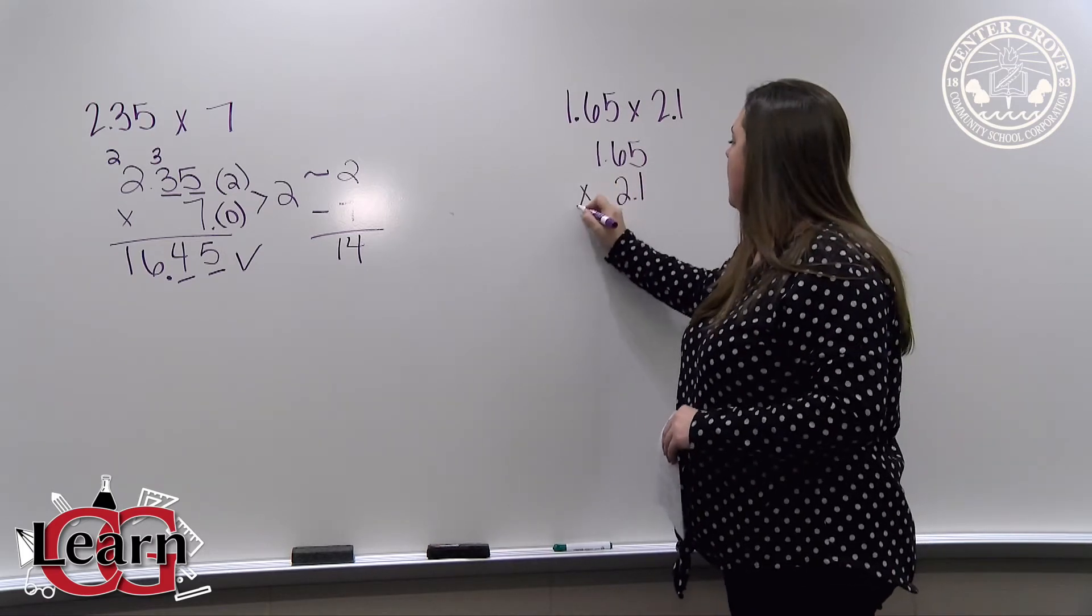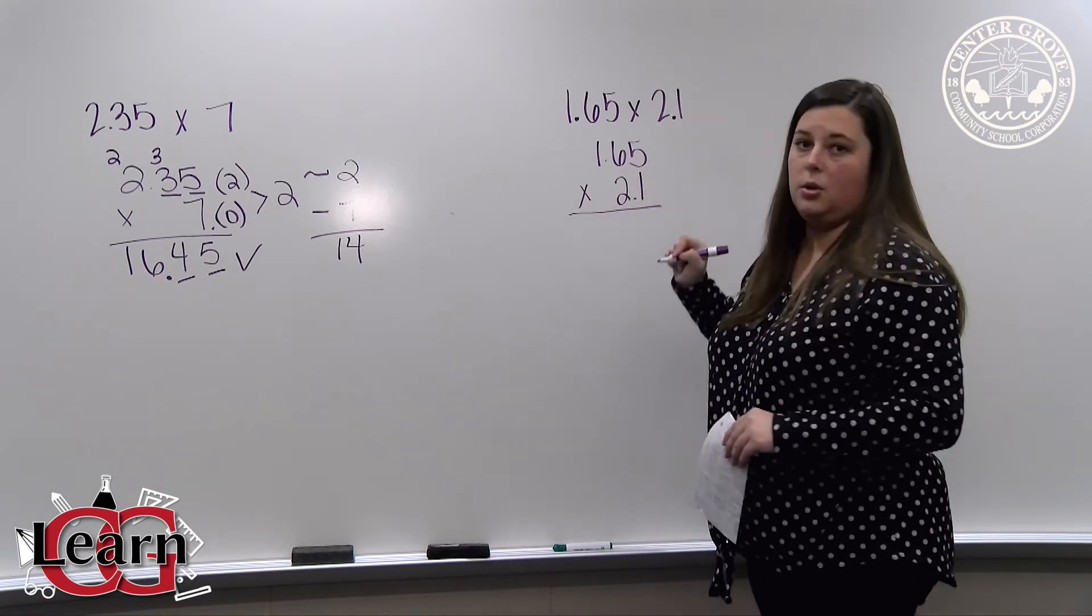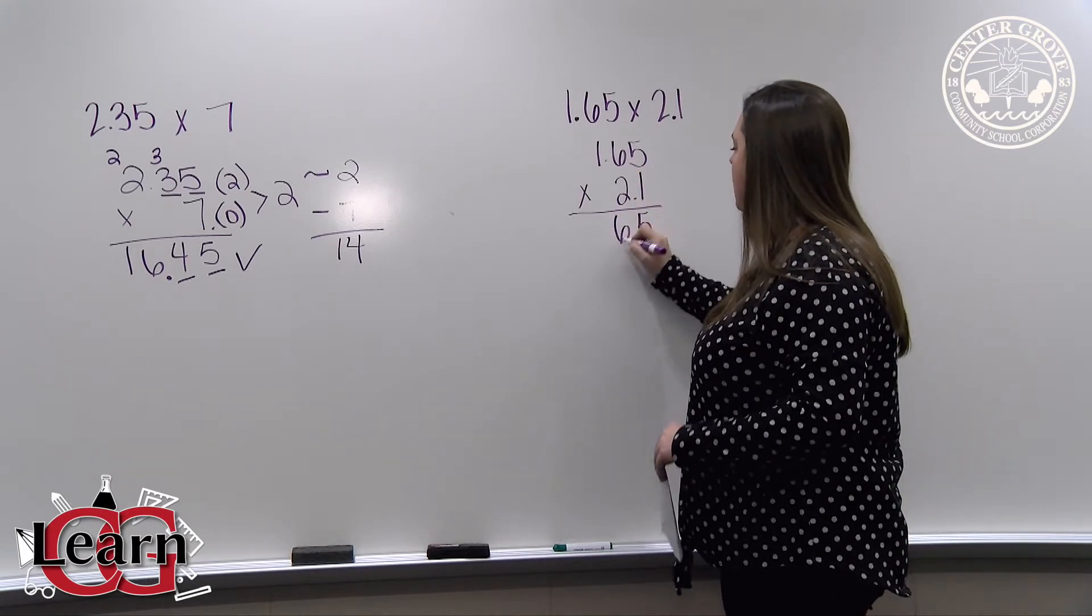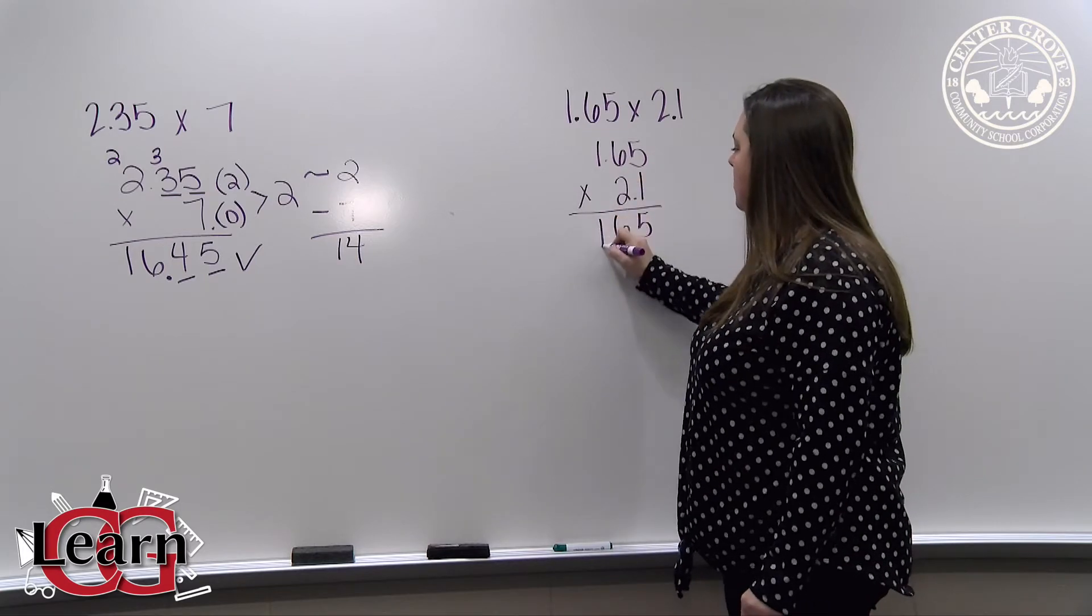We multiply as if both factors are whole numbers. So 1 times 5 is 5, 1 times 6 is 6, and 1 times 1 is 1.